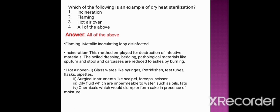In the flaming method, metallic inoculating loops are disinfected. In incineration, it is employed for destruction of infective material — soil dressings, bedding, pathological material like sputum and stool, and animal carcasses are reduced to ashes by burning. In a hot air oven, glassware like syringes, petri dishes, test tubes, flasks, and pipettes are sterilized, as well as surgical instruments like scalpels, forceps, and scissors. Oily fluids impermeable to water and chemicals that would clump in the presence of moisture should also be sterilized in a hot air oven.